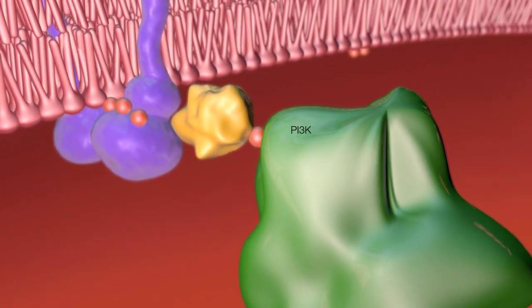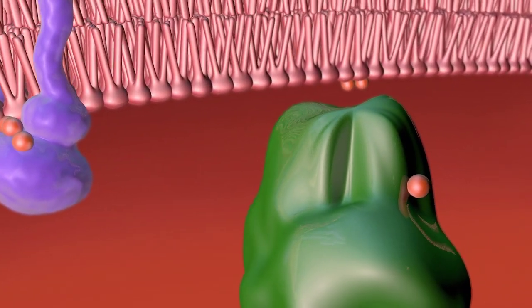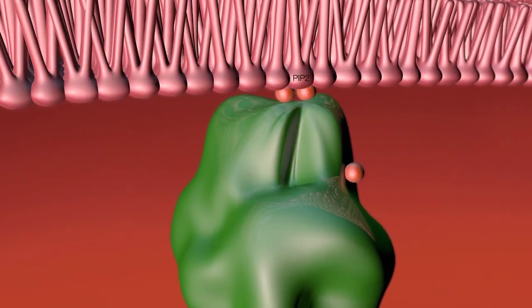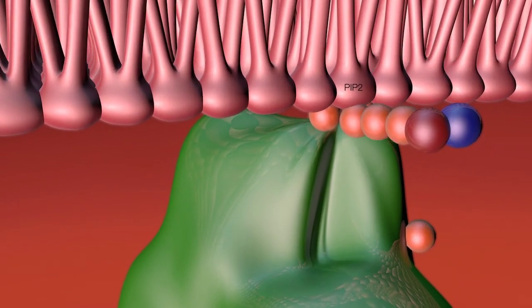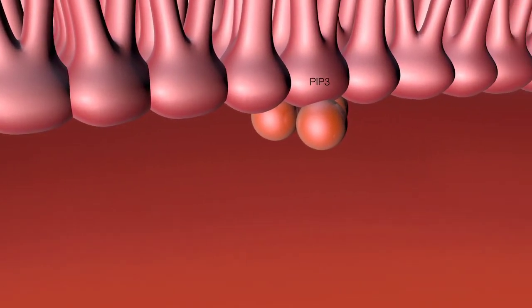IRS1 activates protein PI3K, which catalyzes the phosphorylation of a special kind of phospholipid called PIP2, thus converting it to PIP3.